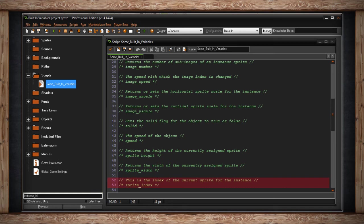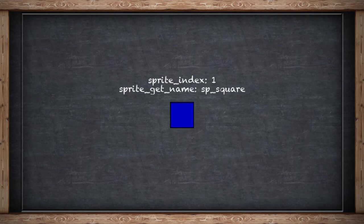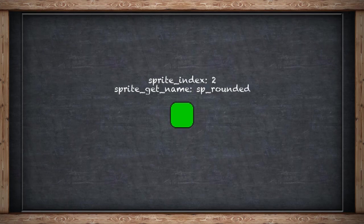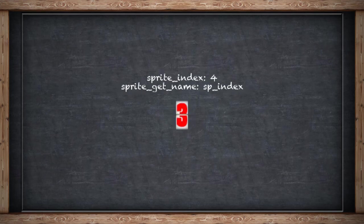SpriteIndex is the index of the current sprite for your instance. This is read and write, and it returns the value of the order number for the sprite resource in the resource tree. You can use this to manipulate which sprite is being shown for your instance. For example, the current index could be sp_player, and after it collides with an enemy, you can change the sprite index to sp_explosion. It's a simple way to check and change which sprite is currently used for your instance without changing the instance itself.